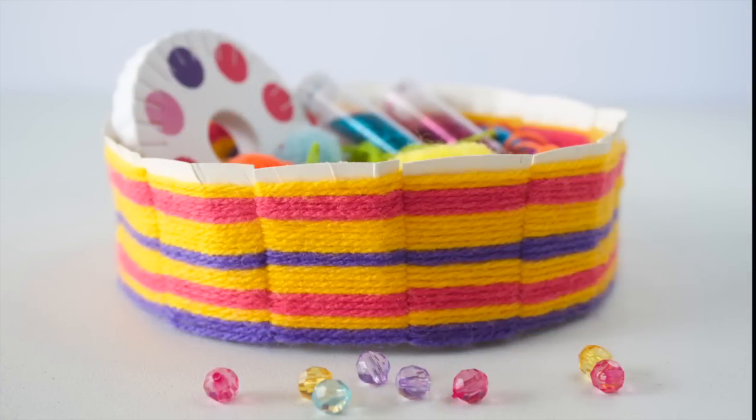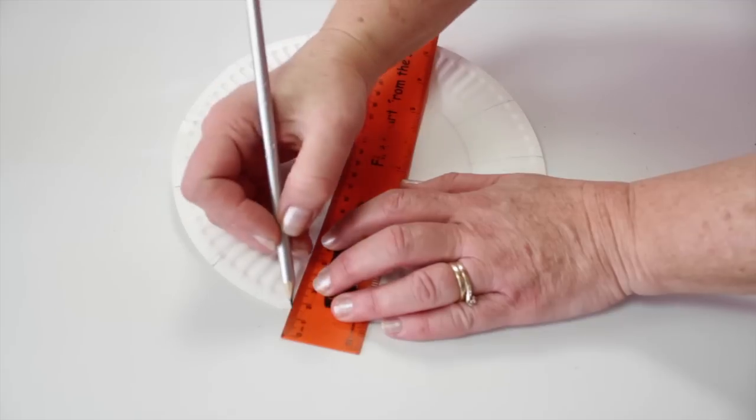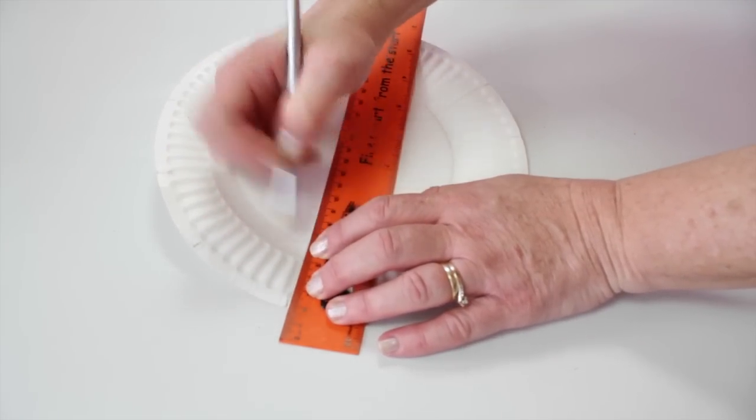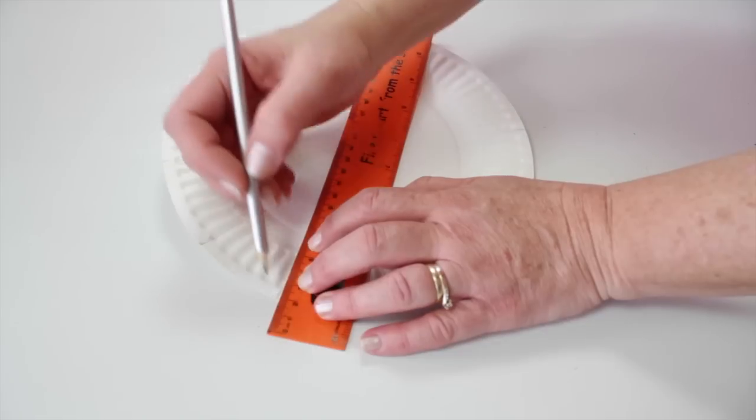First of all, you will need to make 13 tabs out of the plate. To do this, draw a line from the top of the plate to the center circle. I made these lines about 5 centimeters apart.